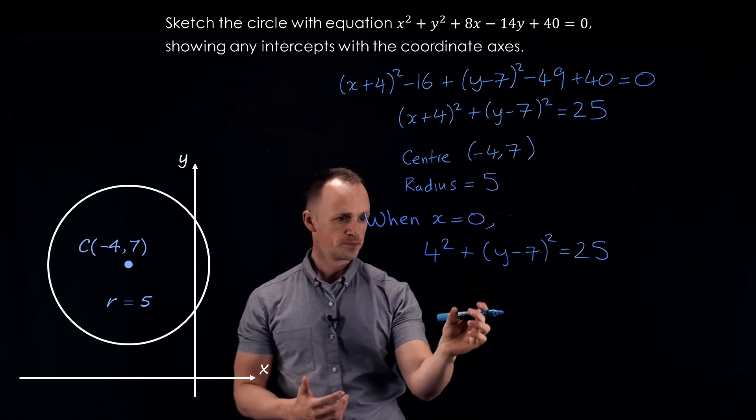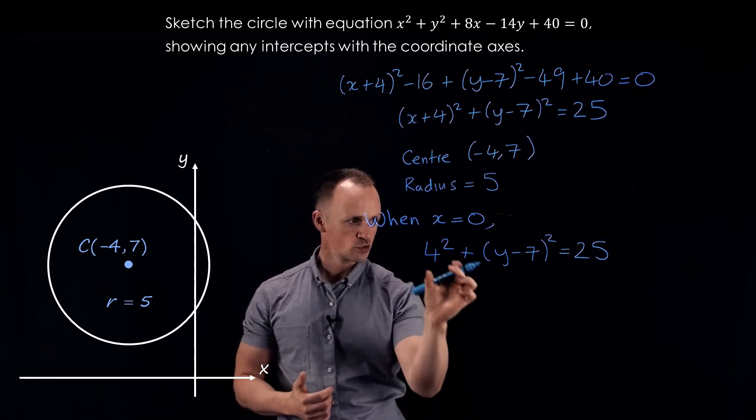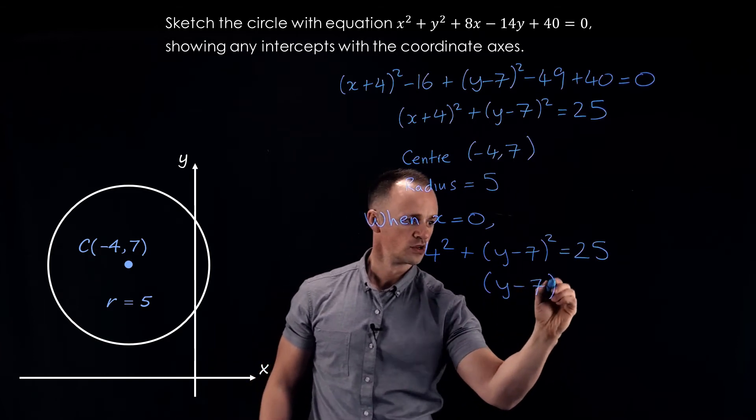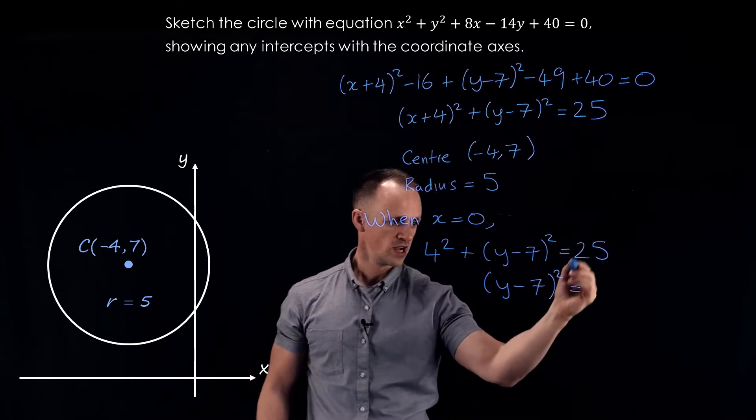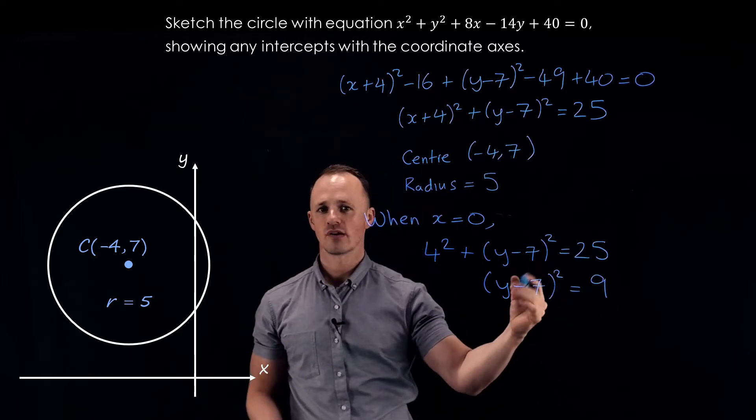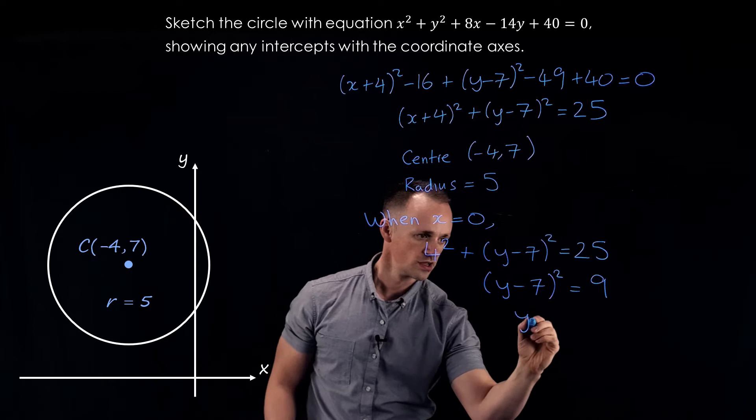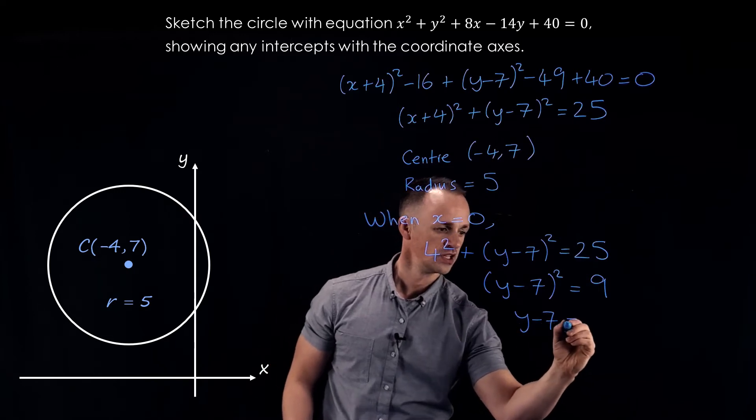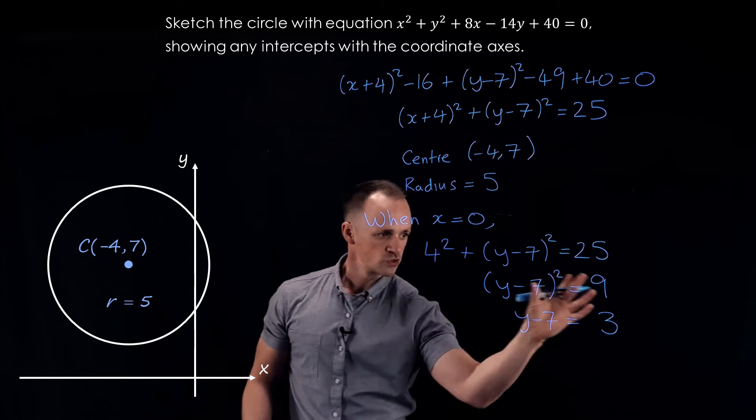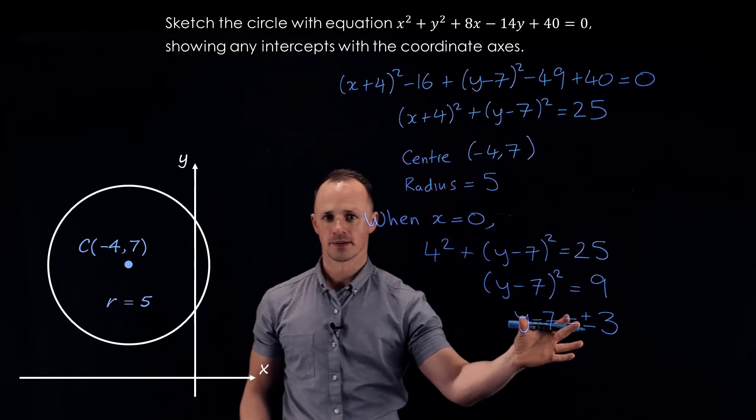Think about the fact that 4 squared is 16. Subtract that from both sides. We're left with y minus 7 squared on the left hand side. The right hand side becomes 9. Now we can square root both sides. So we get y minus 7 equals the square root of 9, which is 3. But don't forget when you square root both sides, we should have a plus or minus in here.